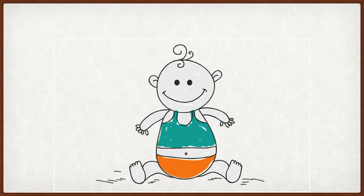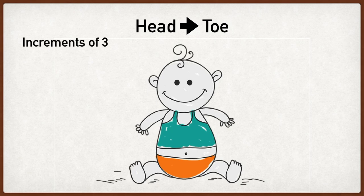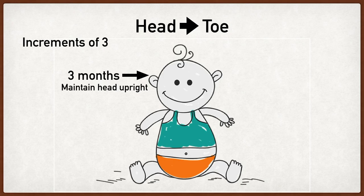What you're going to do is go from head to toe and follow this in increments of three. Starting at the head, which is three months, this will help you remember that this is when neck stability develops and we're able to maintain our head in an upright position.